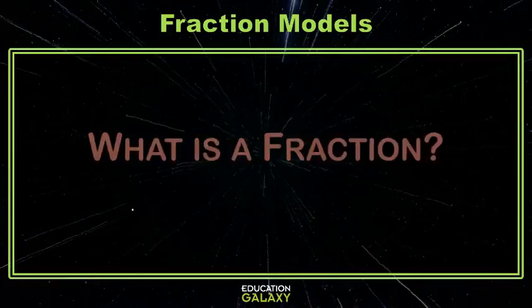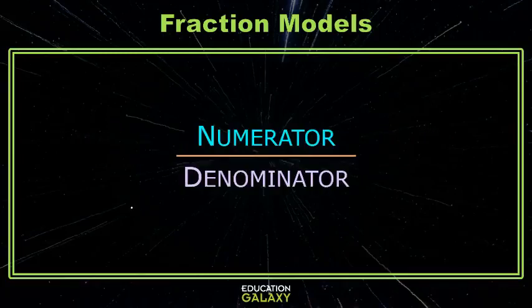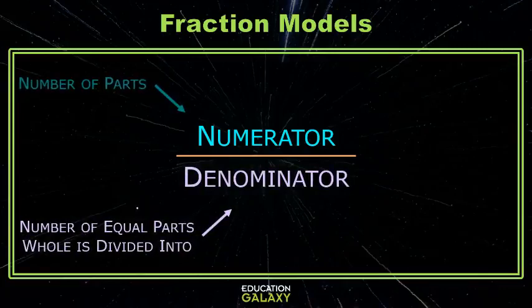So what is a fraction? A fraction is just a value. It's written with one number as the numerator, over a line, over the bottom number, the denominator. The denominator tells us the number of equal parts a whole is divided into. The numerator is the number that tells us how many parts we're being asked about.